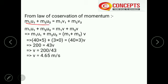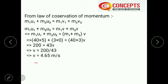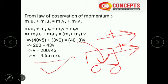From conservation of momentum: M1·U1 + M2·U2 = (M1 + M2)·V. Substituting: 40 × 5 + 3 × 0 = (40 + 3)·V. So 200 = 43·V, giving V = 200/43 ≈ 4.65 m/s. The answer is positive because the girl jumps in the positive direction and the cart also moves in that same positive direction after she lands on it.